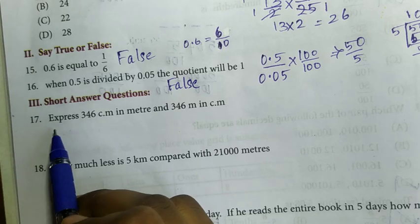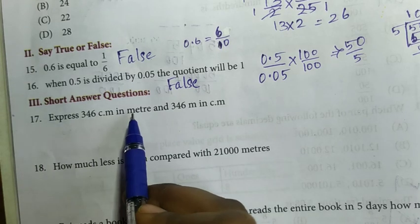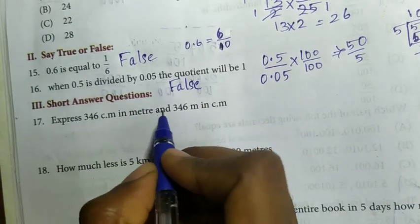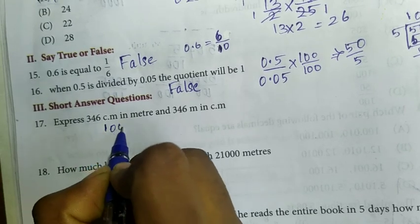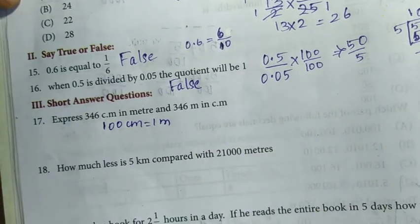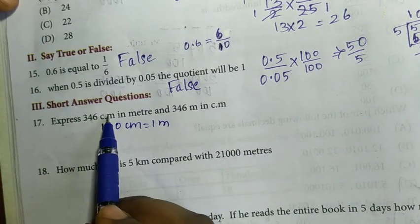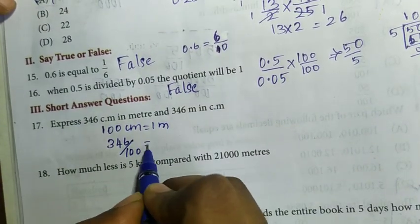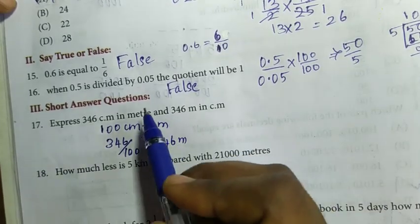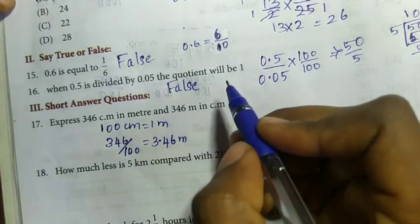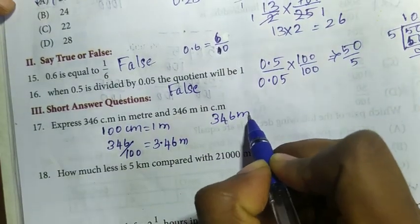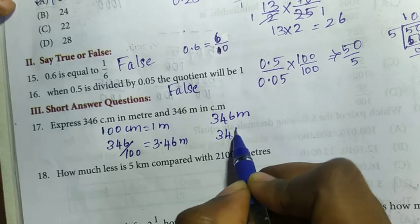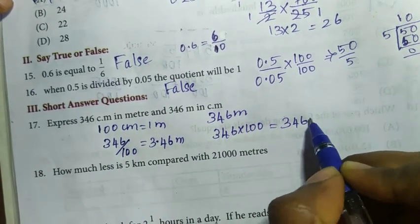Short answer questions. 17th question: express 346 cm in meters and 346 m in cm. To convert 346 cm to meters, divide by 100: we get 3.46 m. To convert 346 m to cm, multiply by 100: we get 34,600 cm.